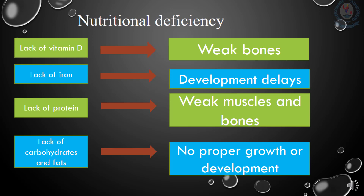Another two very important nutrients are carbohydrates and fats. Carbohydrates and fats provide our body with energy. Our body requires a lot of energy when it is growing at a very fast rate — energy is required to make new cells and to grow and develop tissues and organs. Without energy, proper growth and development cannot occur.